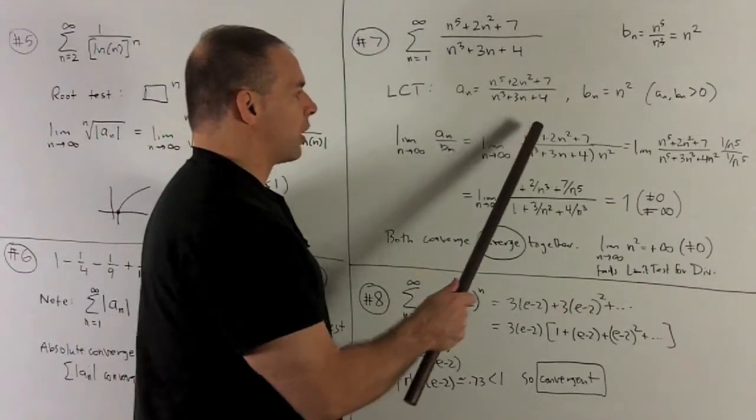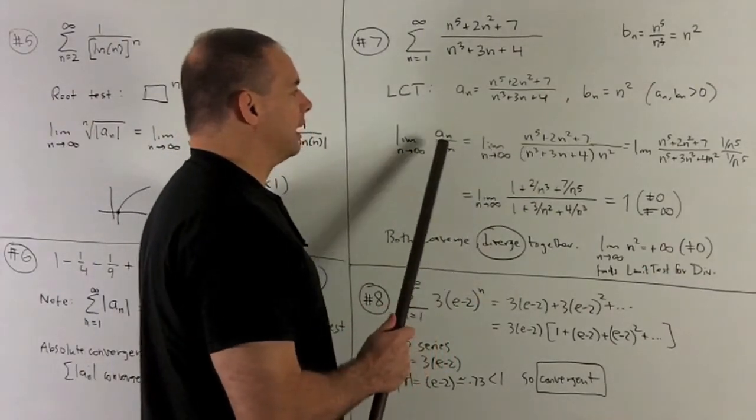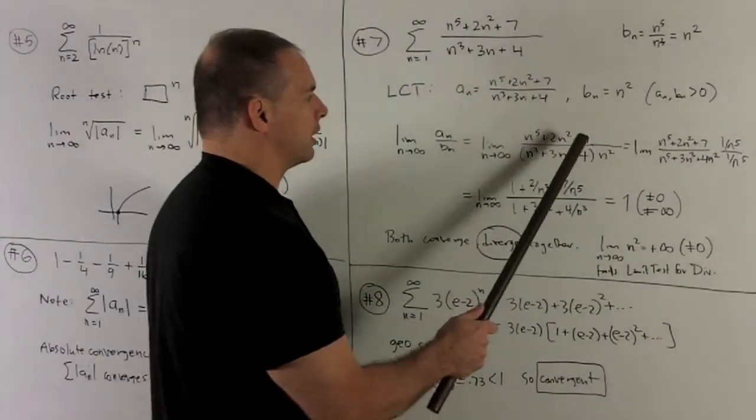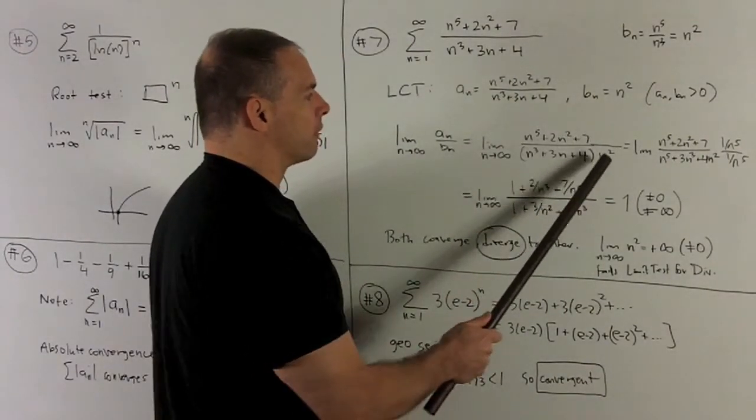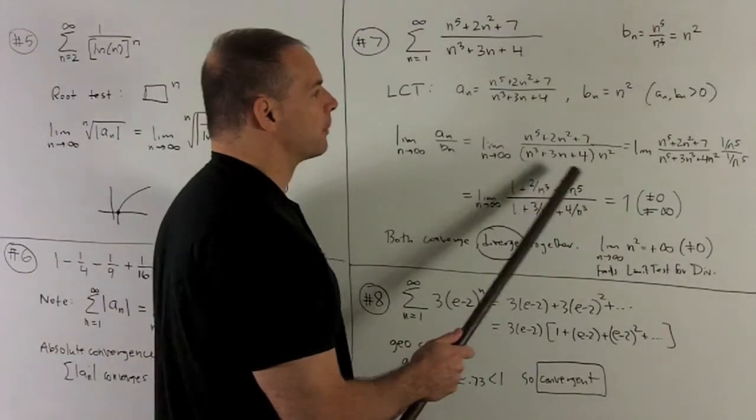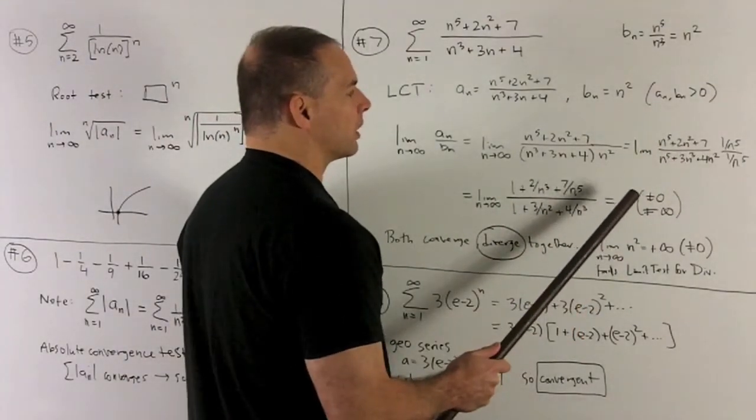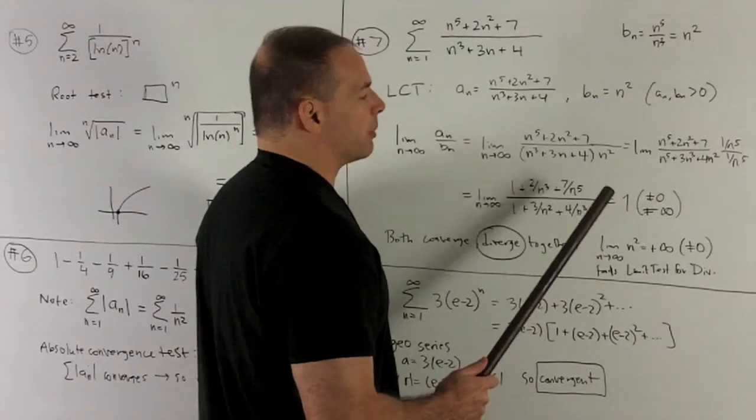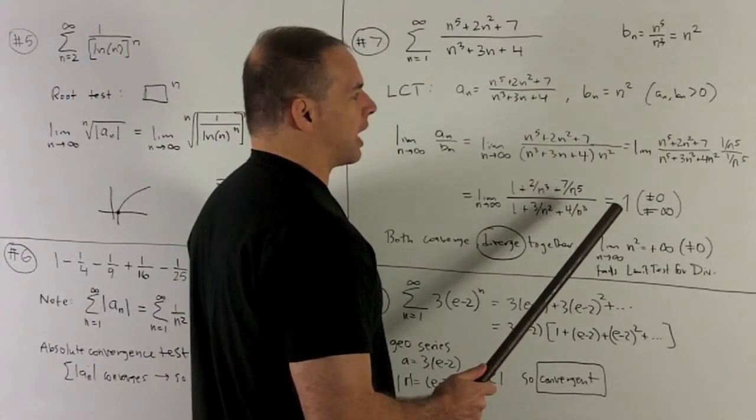So I'm going to do my limit. We're going to take our an, and then we're going to divide by bn, which is the same as dividing by n squared. So that's going to give me a fifth-order polynomial over another fifth-order polynomial over here. So we want to clean that up by dividing top and bottom by n to the fifth. Same as multiplying by 1 over n to the fifth on the top and the bottom.